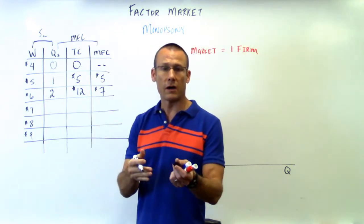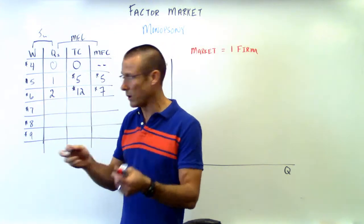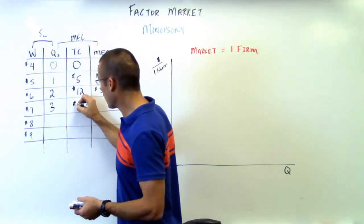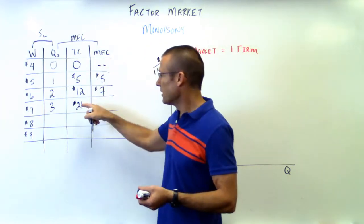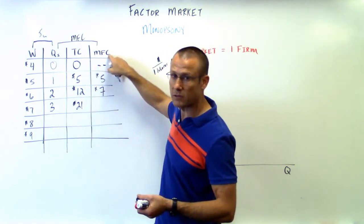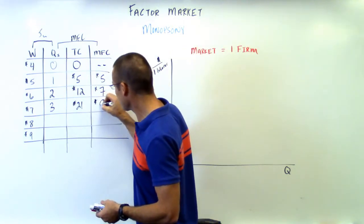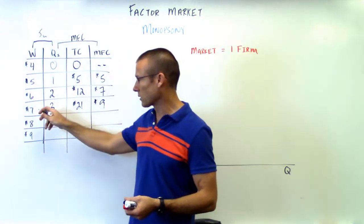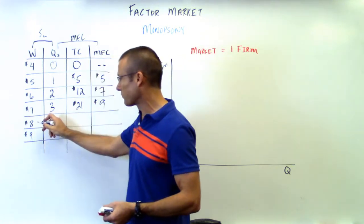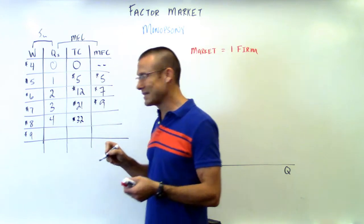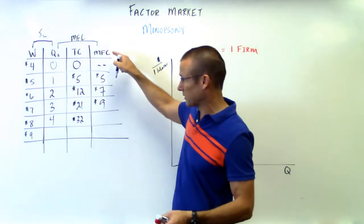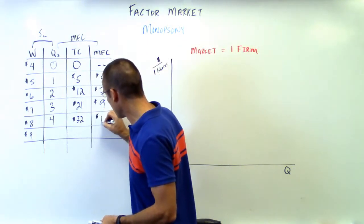We want to hire another person, so we raise the wage to seven and get three people working for us. Seven times three is twenty-one dollars total cost. From twelve to twenty-one, the marginal factor cost is nine dollars. We want yet another person, so we raise the wage to eight dollars and get four people working for us. Eight times four is thirty-two. The additional cost from twenty-one to thirty-two — the MFC — is eleven dollars.